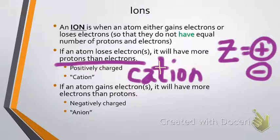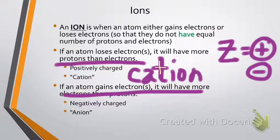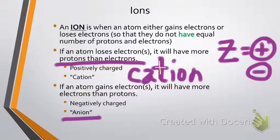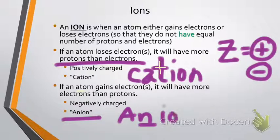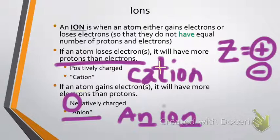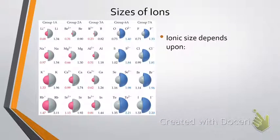Now, if an atom gains electrons, it now has more electrons than protons, and so it's negatively charged. If it's negatively charged, it's called an anion. The way I remembered an anion was anion has two N's, and negative starts with an N.